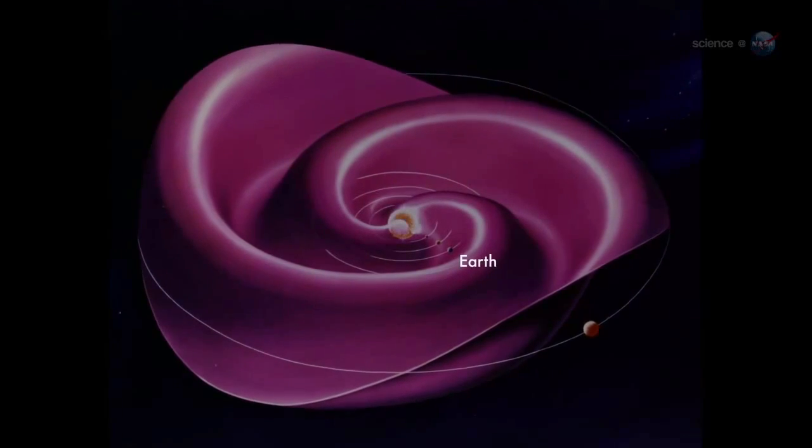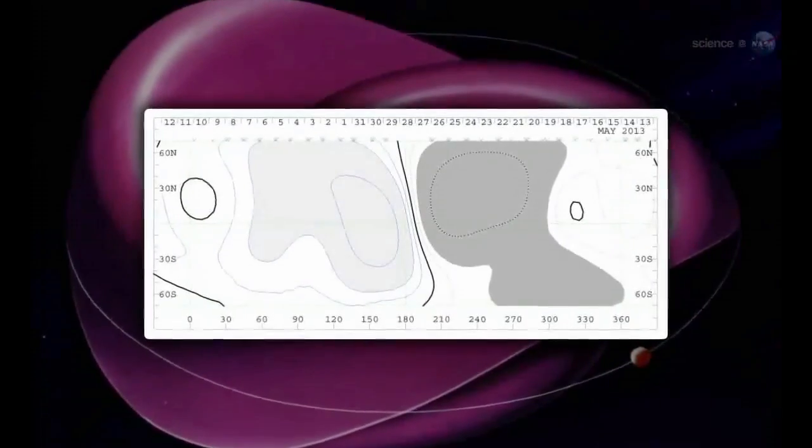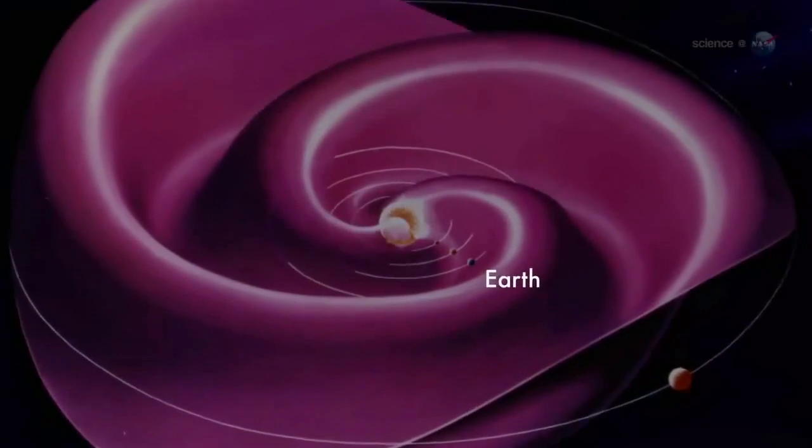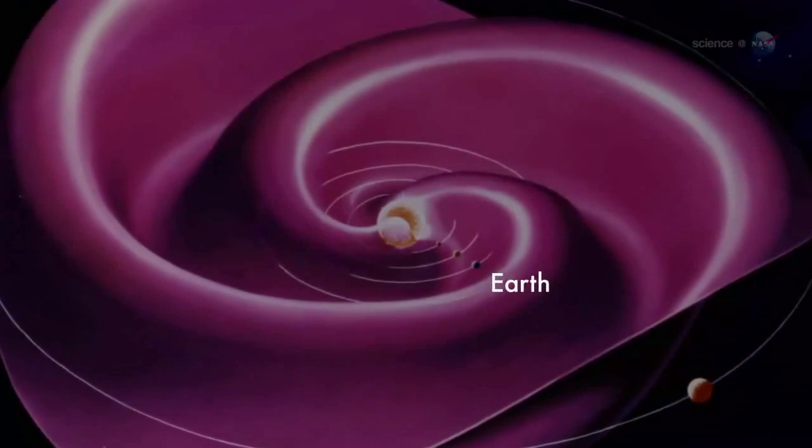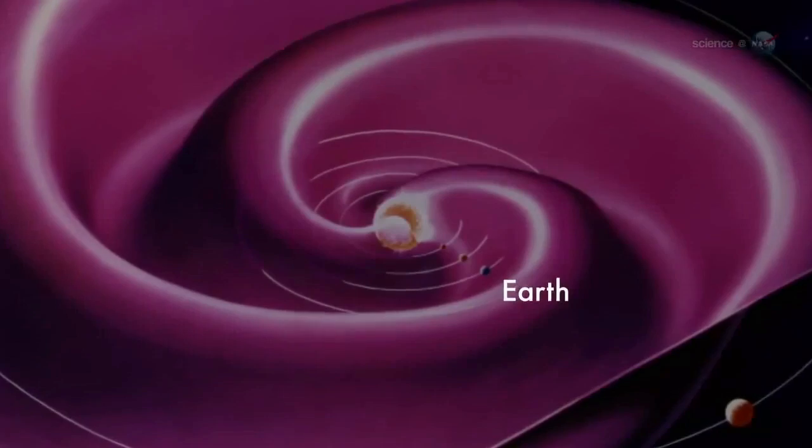During field reversals, the current sheet becomes very wavy. Shearer likens the undulations to the seams on a baseball. As Earth orbits the Sun, we dip in and out of the current sheet. Transitions from one side to another can stir up stormy space weather around our planet.